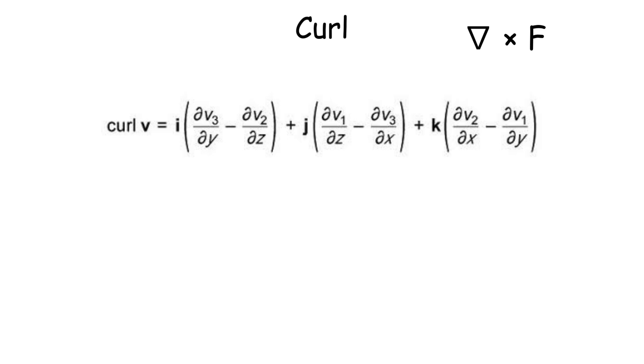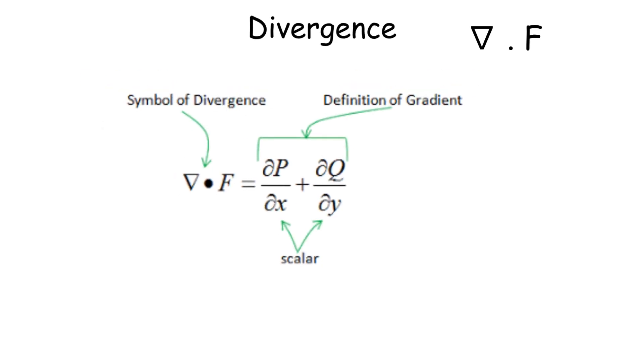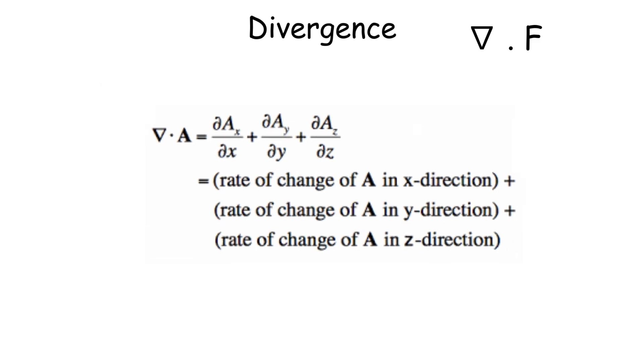Finally, there's divergence, which is the dot product of Nabla with a vector field. Divergence measures how much a vector field is spreading out or converging at each point by summing up specific partial derivatives.